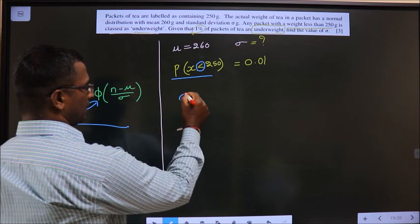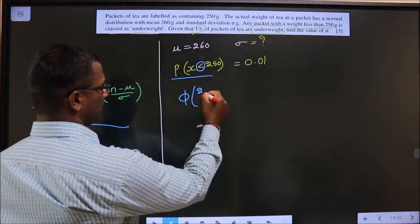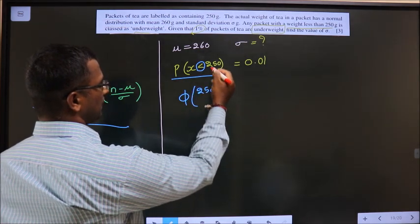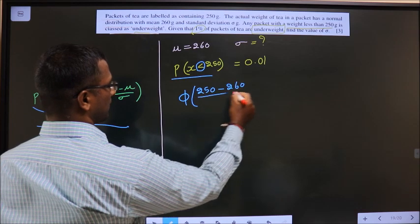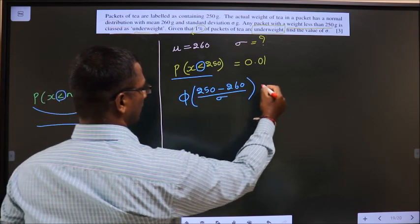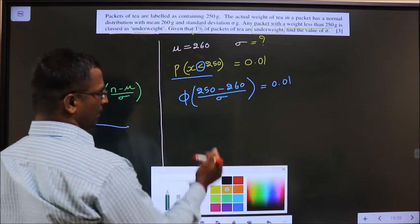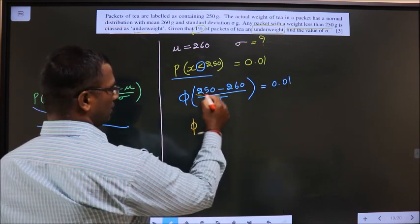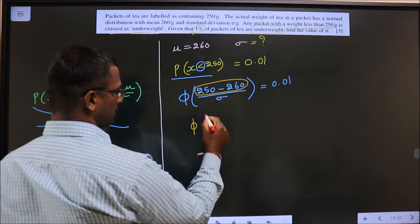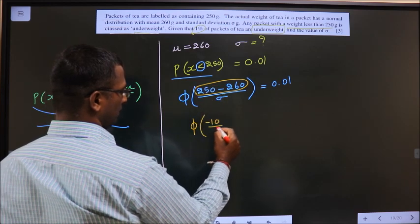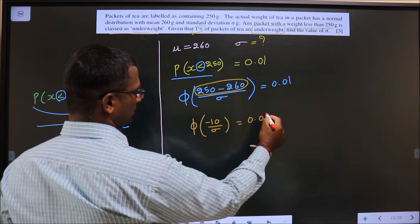So we get φ of (250 minus mean 260) by standard deviation equal to 0.01. Now φ of (250 minus 260) is minus 10 by standard deviation equal to 0.01.